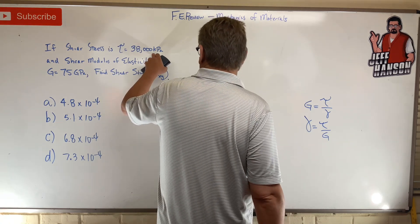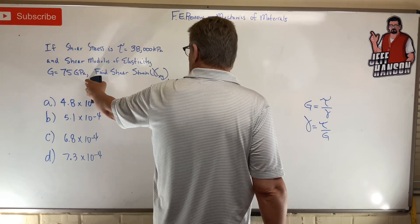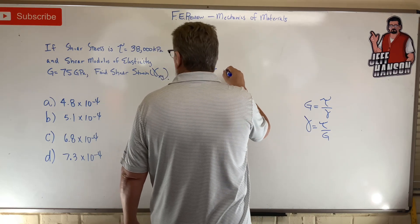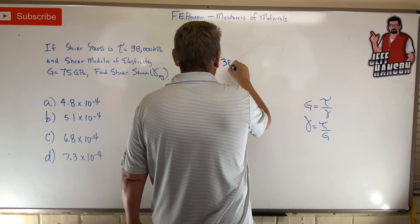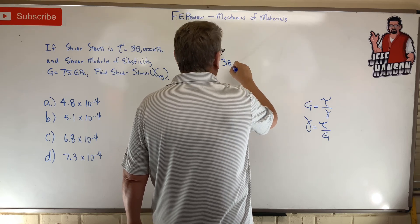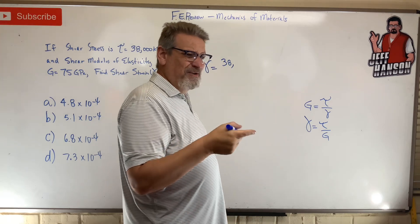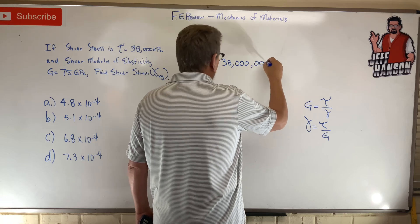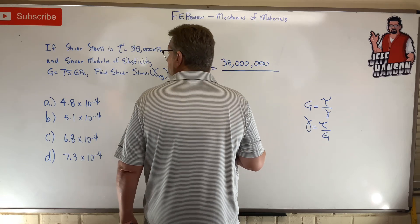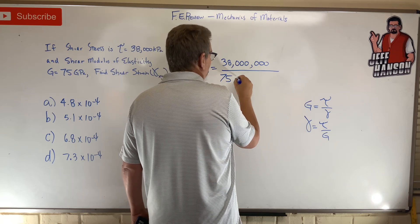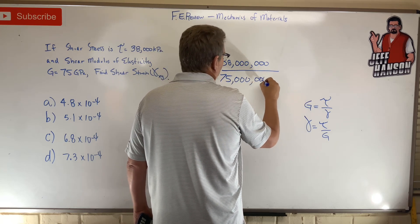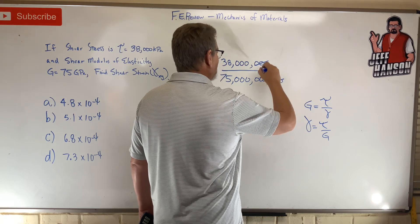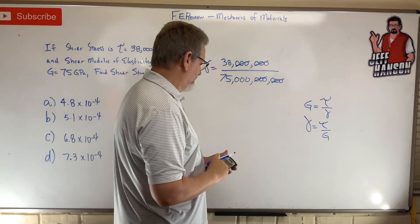This one's in kilopascals and this one's in gigapascals, so the units don't match. To avoid confusion with moving decimals, just put the zeros on it: 38,000 kPa becomes 38,000,000 Pa (add three zeros), and 75 GPa becomes 75 followed by nine zeros for gigapascals.